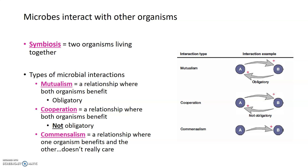We talked a bit about how microbes interact with each other and live together in communities called biofilms. But microbes can also interact with many different other organisms through a process known as symbiosis, which is simply two organisms living together. We tend to think of symbiosis as being beneficial for both organisms involved, but that doesn't have to be the case.